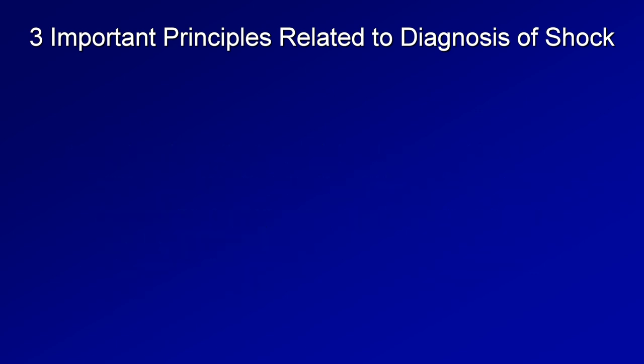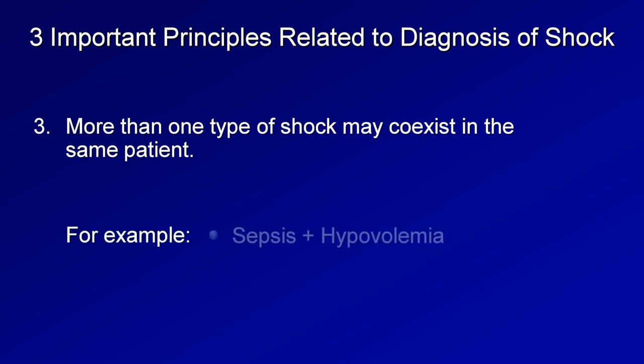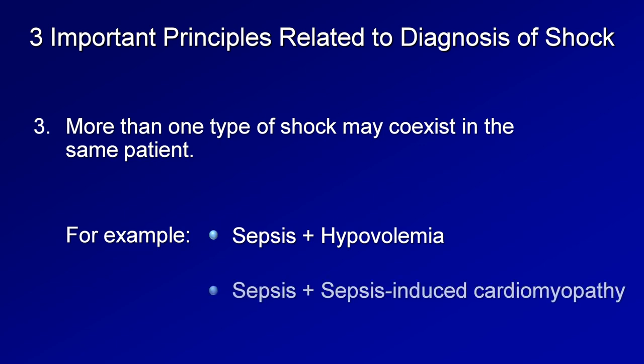The final important principle is that more than one type of shock may coexist in the same patient. Two particularly common examples: first, septic shock combined with hypovolemic shock — in sepsis, leaky capillary membranes cause extravasation of intravascular proteins pulling fluid along, and patients are typically ill for days before presentation during which they drink little fluid. Another common combination is septic shock with cardiogenic shock from sepsis-induced cardiomyopathy.